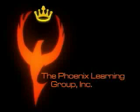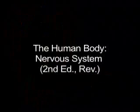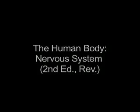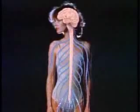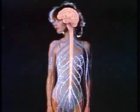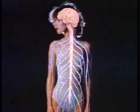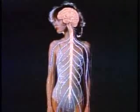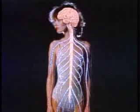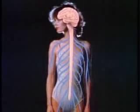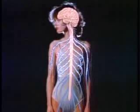The nervous system — the brain, spinal cord, and nerves — is a living communications network carrying various kinds of messages to and from the different parts of your body. The nervous system is composed of nerve fibers that conduct information into your spinal cord and brain, and other nerve fibers that send information out to different parts of your body.